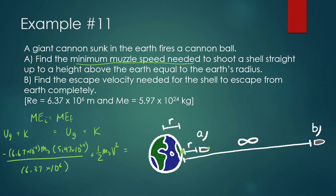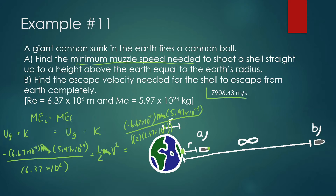We set this equal to negative 6.67 × 10⁻¹¹ times mass of the shell times mass of Earth (5.97 × 10²⁴), divided by how far it is — and at this point it's twice as far as before, so 2 × 6.37 × 10⁶. We don't have two variables because we can get rid of the mass of the shell, leaving only velocity. Be careful when you put it into your calculator because there are so many big numbers — students many times get this wrong. What we should get for the velocity is around 7,906 meters per second.